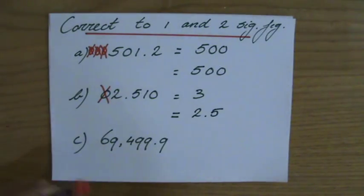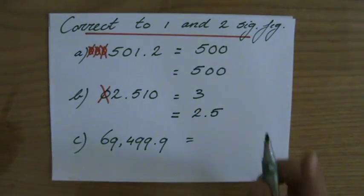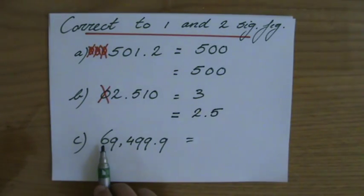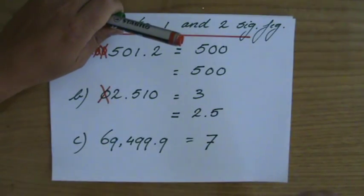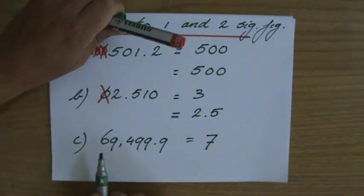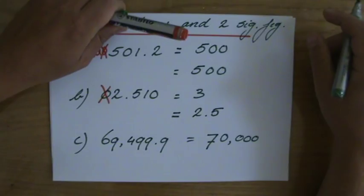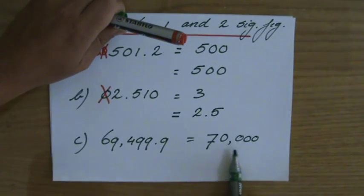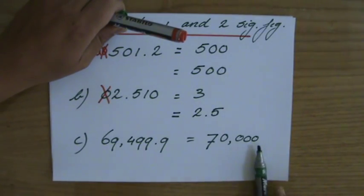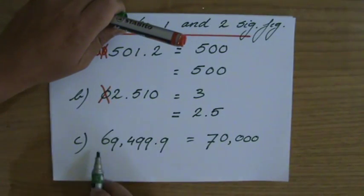The last number is 69,499.9. To one significant figure, the six either stays a six or goes up to a seven — that depends on the next digit, and indeed it goes up to a seven. Now the answer isn't just seven — that's not the same as 69,000. You have to put those zeros there: the answer is 70,000. Do not write 70,000.0, because then you're assuming a certain amount of accuracy. Just the whole number — 70,000 — with those zeros as placeholders to keep it in context.